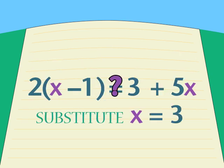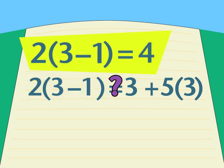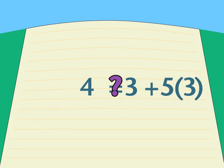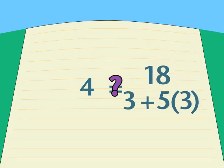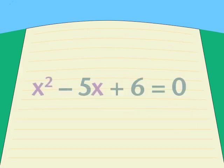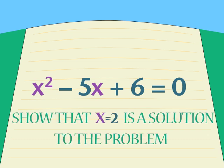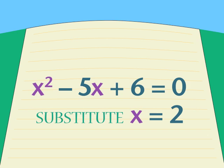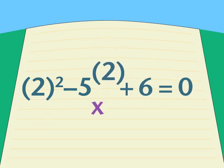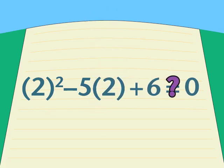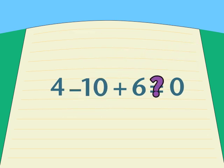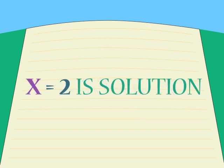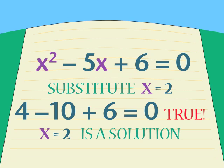Let's avoid writing false statements by using a special symbol whenever we're testing or checking an answer, to emphasize that until we're done testing, the statement is really the question: does this equal that? Testing is a very simple process, and it works with harder equations. Even though we don't know how to solve equations like this yet, we can test whether a particular answer is right or wrong by substituting. In this case, we replace x with 2. Following our recipe for simplifying expressions, we end up with a true statement: 4 minus 10 plus 6 equals 0. So x equals 2 is a solution.